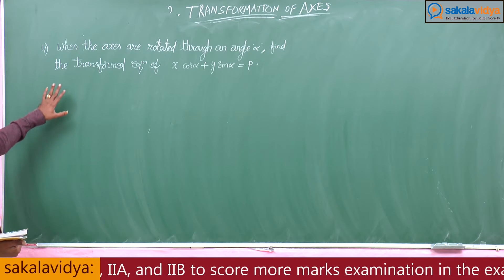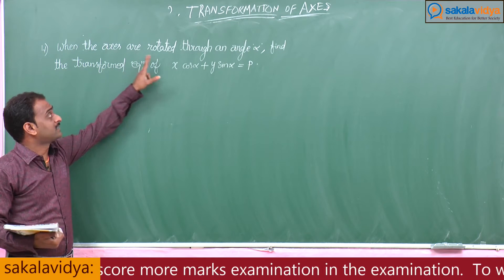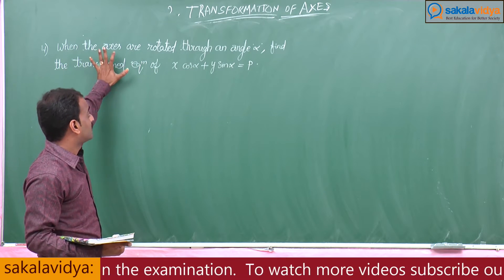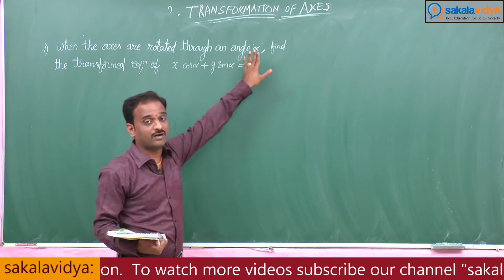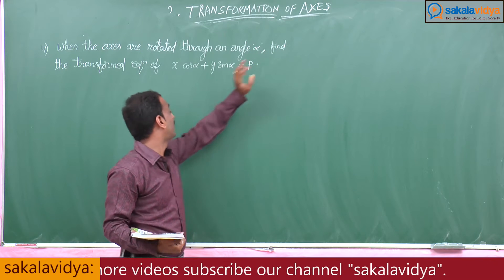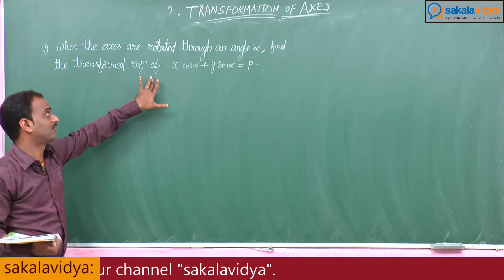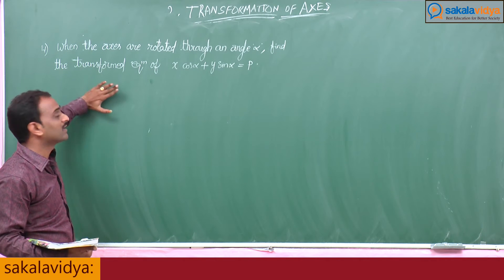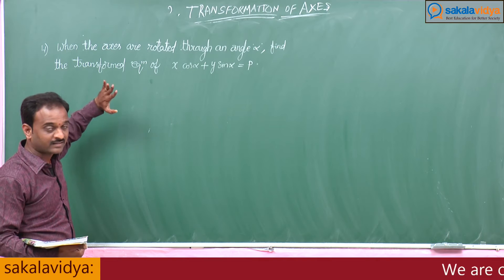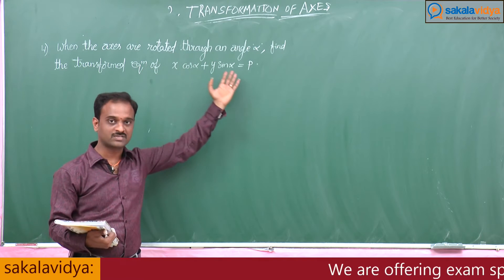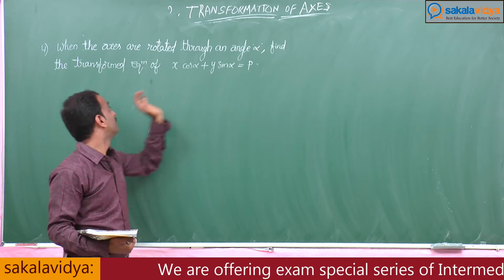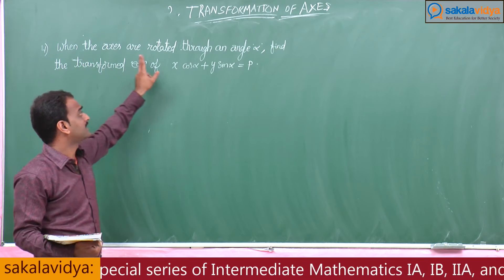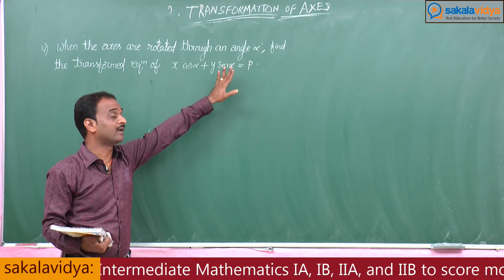If you observe the given problem, the axes are rotated through an angle alpha. We have to find the transformed equation. This is the original equation, and the condition is axes are rotated through an angle alpha.